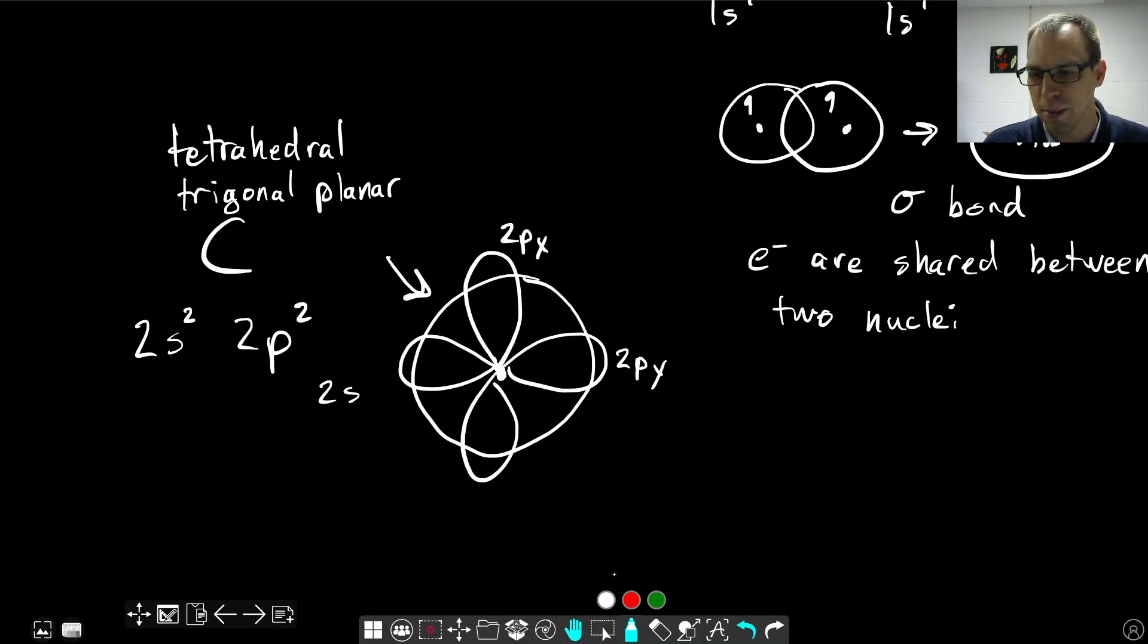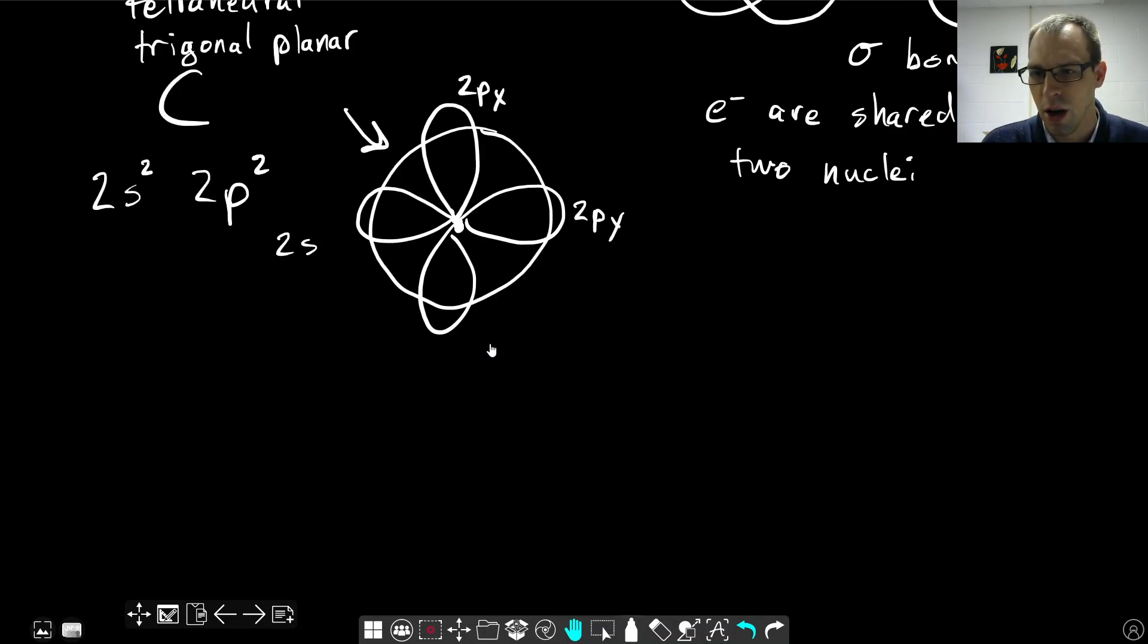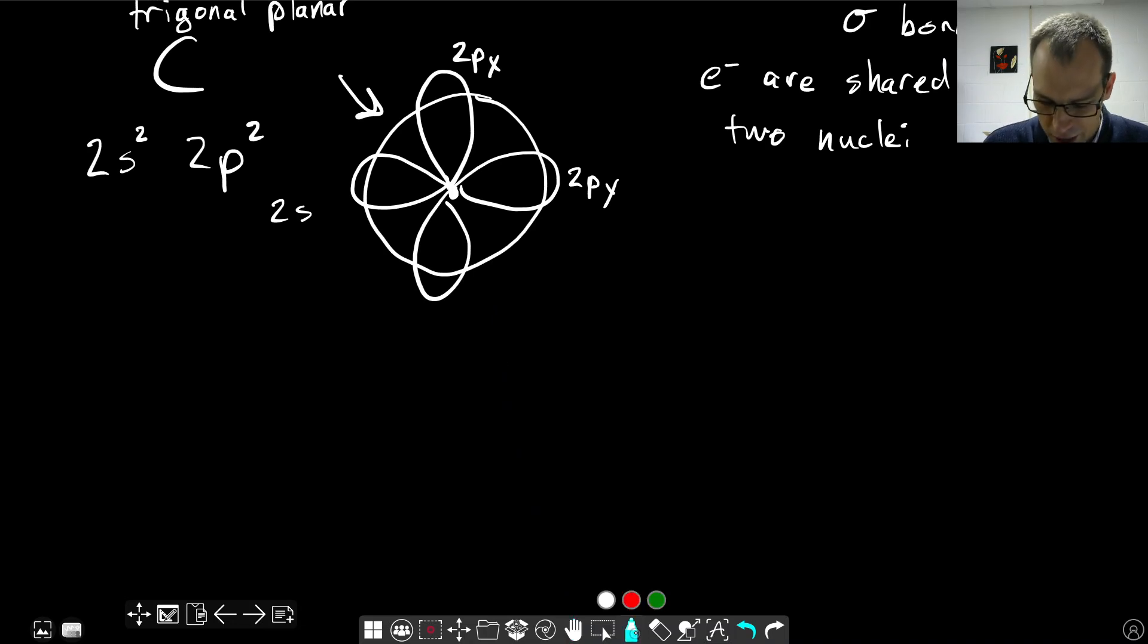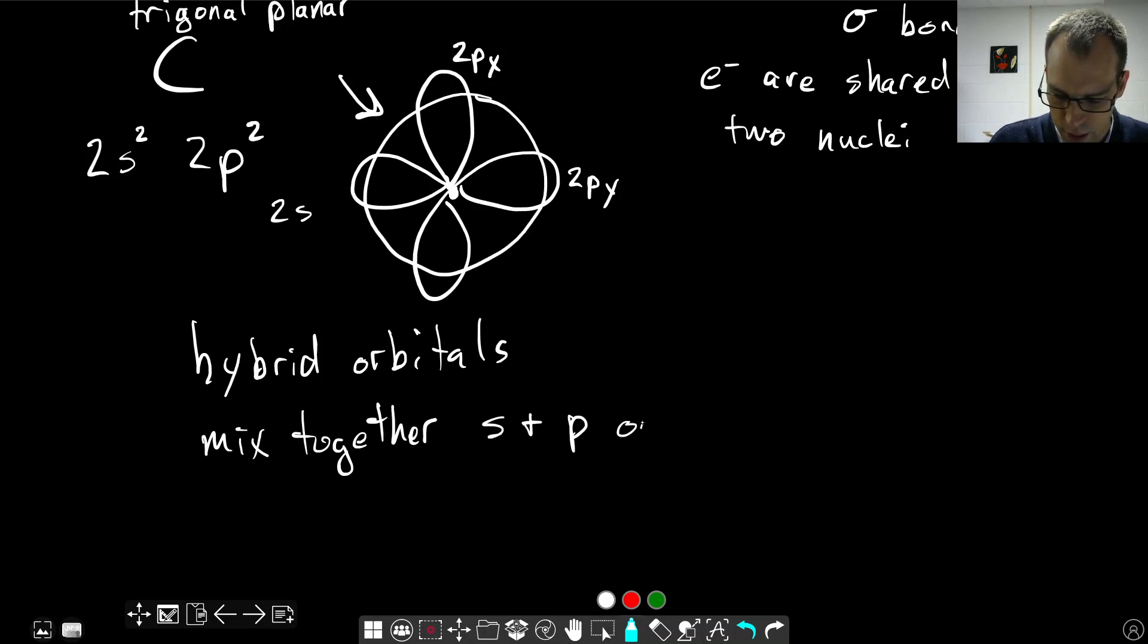And the conceptual idea of valence bond theory here is that these orbitals are not going to, when a molecule forms, these orbitals don't stay the same as they are when they are on a single atom sitting by itself. And so we have what we call hybrid orbitals. And these are, we're going to mix together s and p orbitals to make new ones that have the correct shape, have the correct geometry. And we'll get orbitals with the correct geometry.